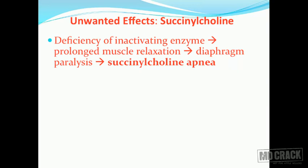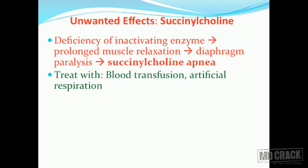If the patient has a deficiency of the inactivating enzyme - plasma cholinesterase - there is prolonged muscle relaxation. The skeletal muscles of respiration and the diaphragm get paralyzed and the patient suffers from apnea. This is classically called succinylcholine apnea. If succinylcholine apnea occurs, it tells you that this patient probably has an atypical cholinesterase enzyme. You need to supply this enzyme - which is not directly possible - so you treat this patient by giving fresh blood transfusion along with artificial respiration.